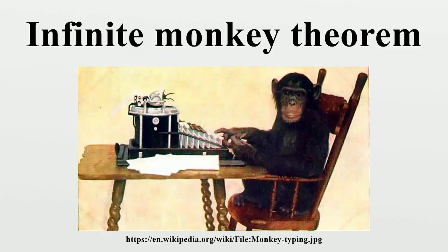Borges then imagines the contents of the Total Library which this enterprise would produce if carried to its fullest extreme. Everything would be in its blind volumes. Everything. The detailed history of the future. Aeschylus' The Egyptians. The exact number of times that the waters of the Ganges have reflected the flight of a falcon, the secret and true nature of Rome. The Encyclopedia Novalis would have constructed. My dreams and half dreams at dawn on August 14, 1934. The proof of Pierre Fermat's theorem. The unwritten chapters of Edwin Drood. Those same chapters translated into the language spoken by the Garamantes. The paradoxes Berkeley invented concerning time but didn't publish. Urizen's Books of Iron. The premature epiphanies of Stephen Dedalus, which would be meaningless before a cycle of a thousand years. The Gnostic Gospel of Basilides. The song the Sirens sang. The complete catalogue of the library. The proof of the inaccuracy of that catalogue. Everything.